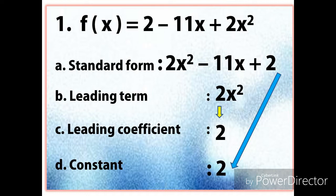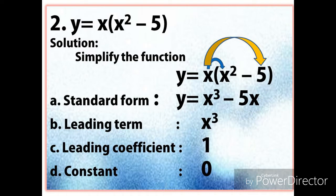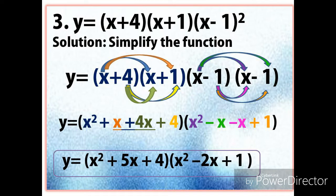Example number two is Y equals X times the quantity X squared minus 5. We simplify by distributing, giving us Y equals X cubed minus 5X in standard form. The leading term is X cubed, the leading coefficient is 1, and the constant is 0.